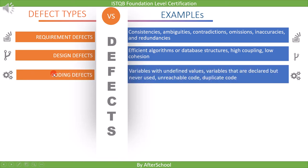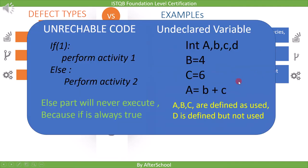The third defect type is coding defects. Examples include variables with undefined values, variables that are declared but never used, unreachable code, and duplicate code. The main focus of static testing is to find such defects because they cannot be found in dynamic testing. For example, unreachable code and variables which are defined but not used occupy memory and may result in slow performance.